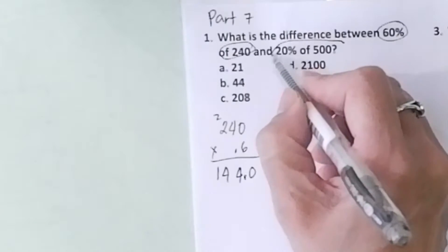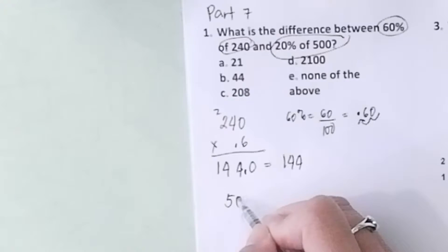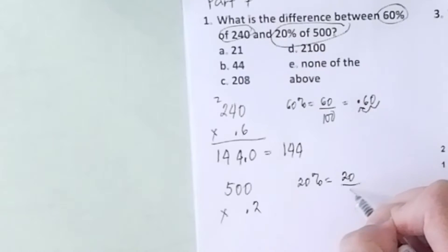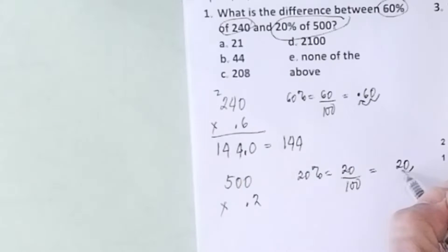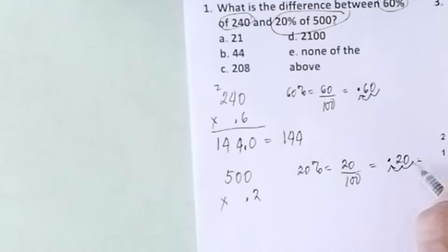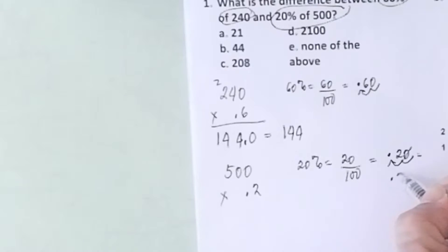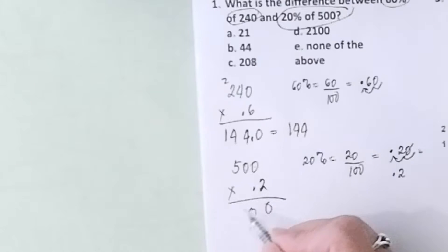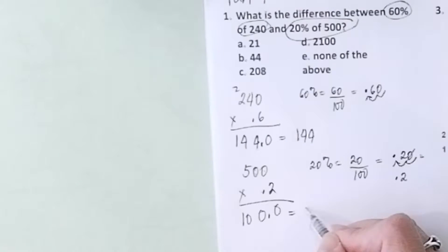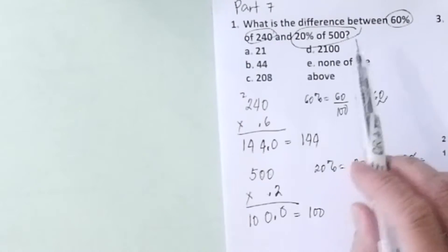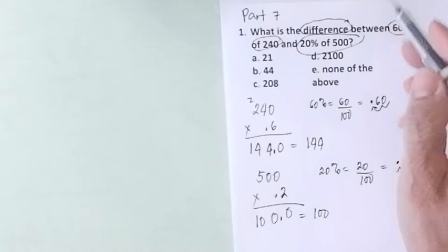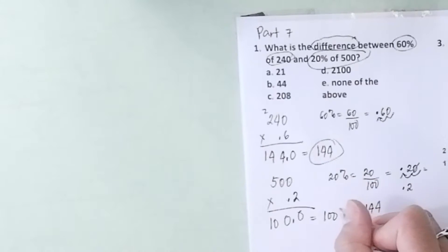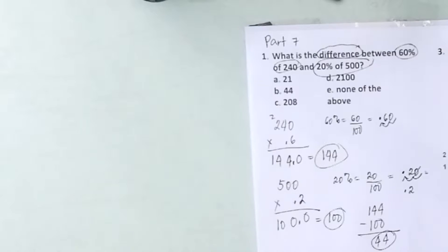Next, we get 20% of 500. That is 500 times 0.2. Why 0.2? 20% means 20 per 100; move the decimal point 2 places to the left, ignore the zero, you just write 0.2. So 0 times 2 is 0, 0 times 2 is 0, 5 times 2 is 10 — we have 100. Then subtract them because you are getting the difference. 144 minus 100 gives us 44. Final answer is 44, so the answer is letter B.